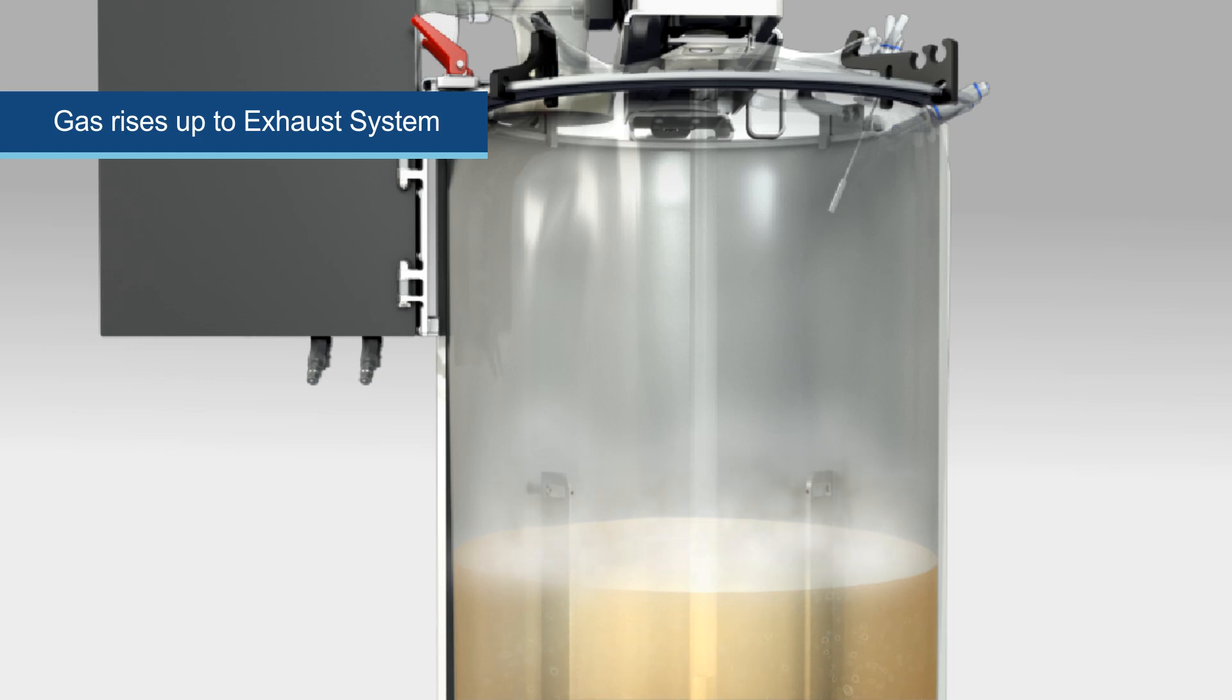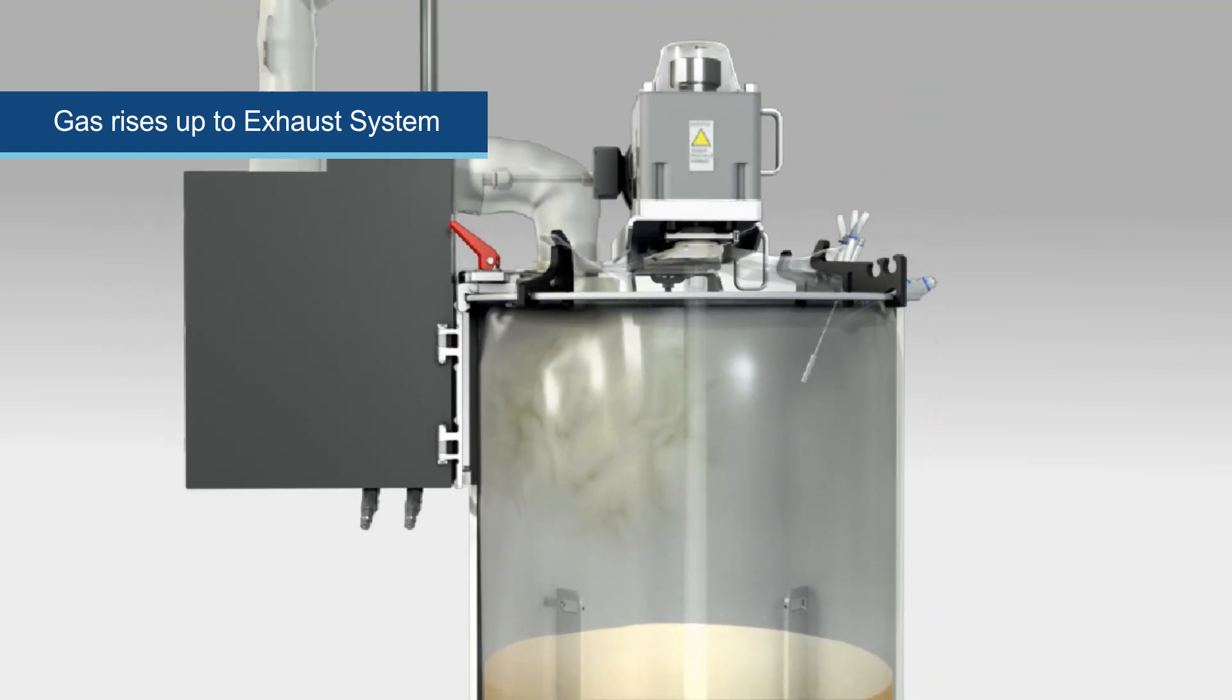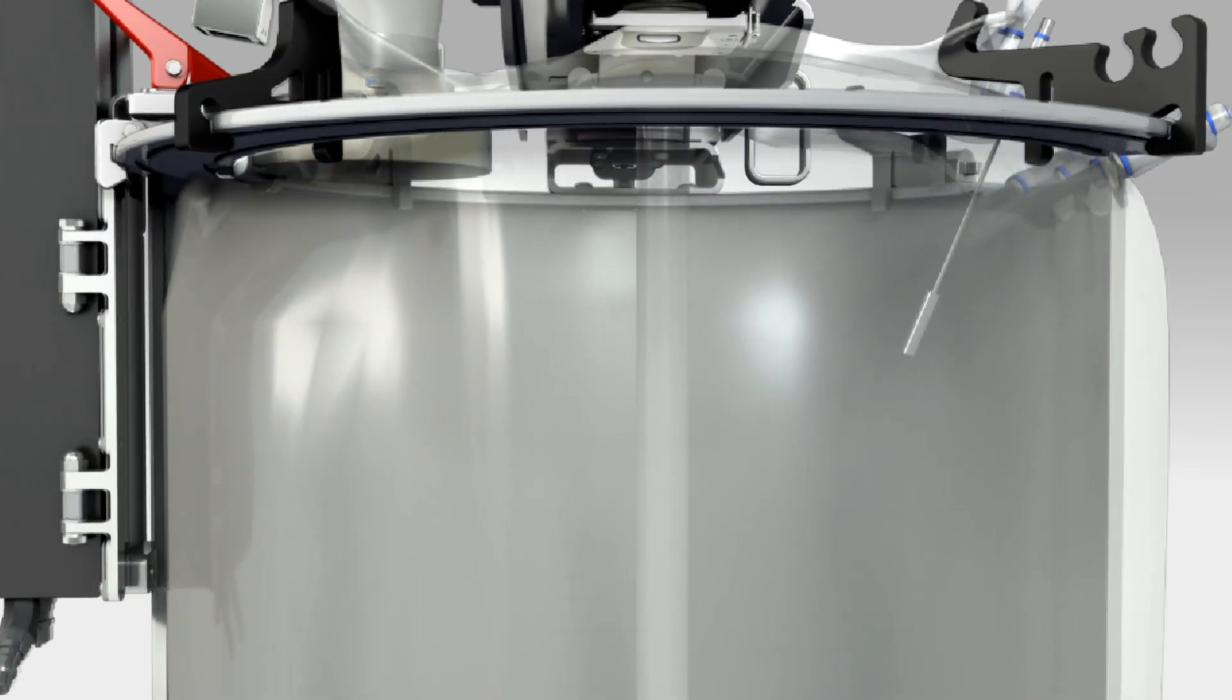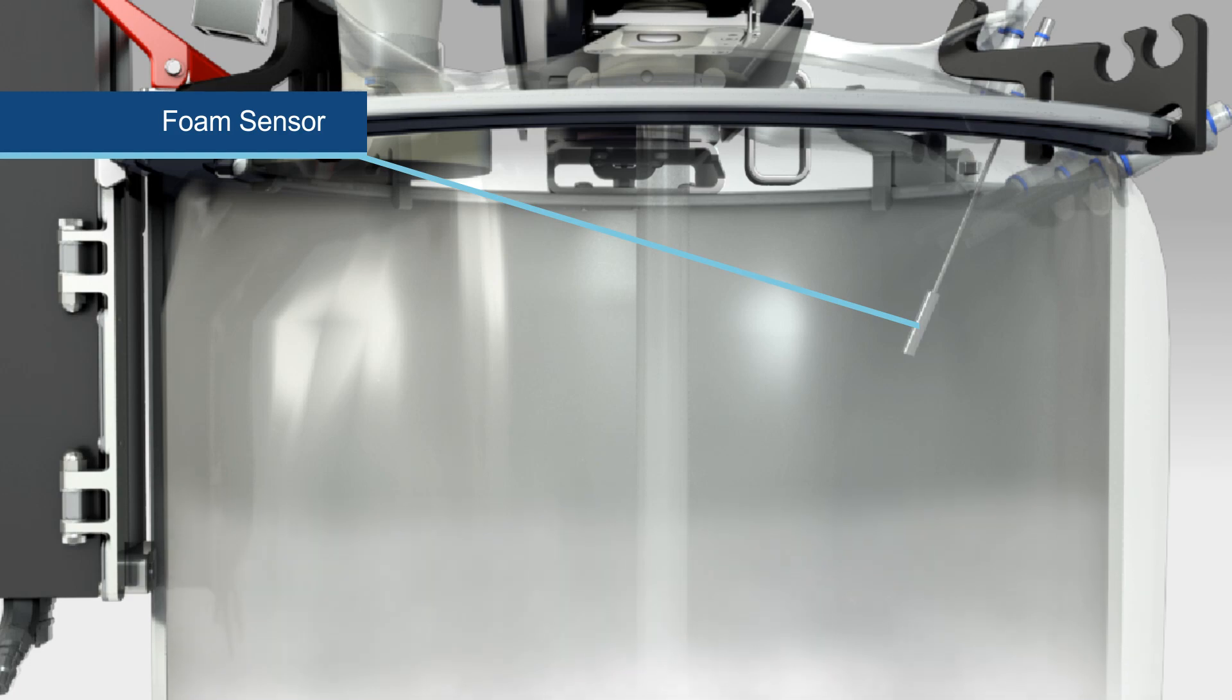During operation, the exhaust system enables the correct KLA values required for microbial fermentation to be achieved. The exhaust system is available with an optional condenser plate to minimize evaporative losses. It also prevents filter fouling caused by generated particulates and wetting of the filter cartridge. The foam sensor will alert the operator in case of excessive foaming.